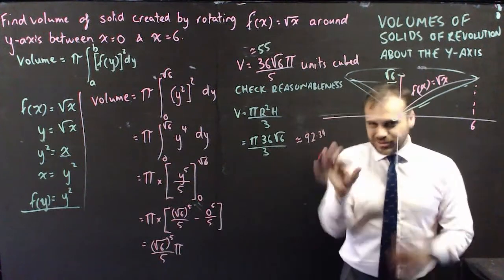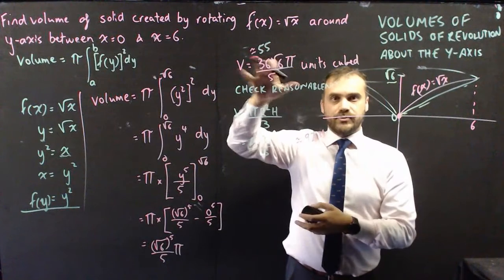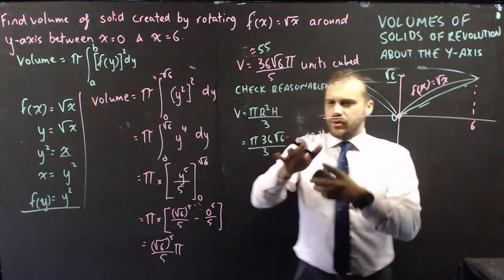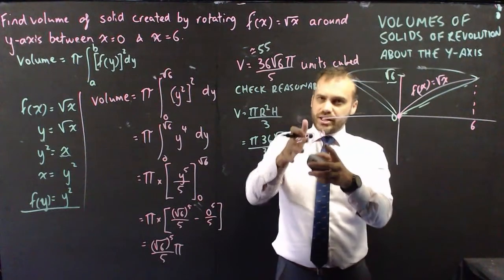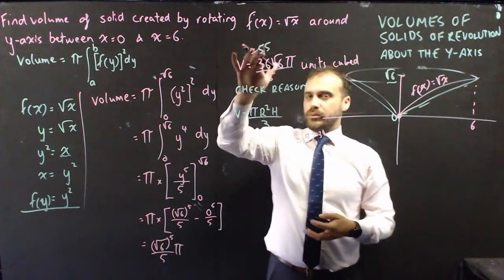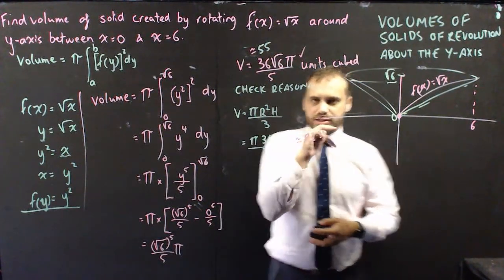Well, it doesn't look great, right? Because the volume of this one is 55, if I find a decimal approximation. When I checked it, 92. So my check is almost double, not quite, of what my actual answer is. This is what I think the answer is. This is my check for reasonableness.